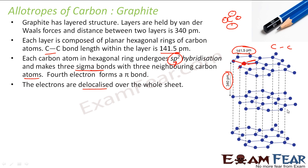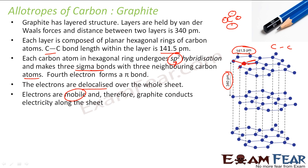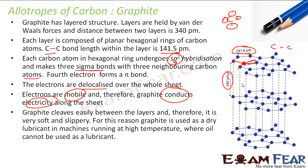The layers slip over each other. The electrons are mobile and that is why graphite is a good conductor of electricity — and that is why it is used in batteries. The layers are held by weak van der Waals forces which can easily break, making graphite very soft and slippery. The layers slip over each other, and for this reason graphite is used as a dry lubricant, especially in machines operating at very high temperatures.